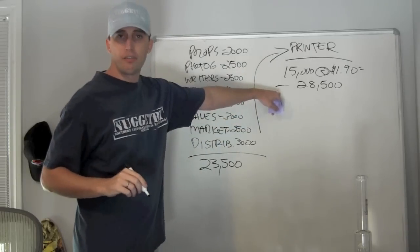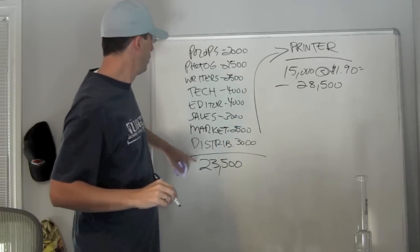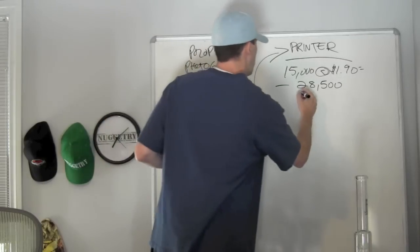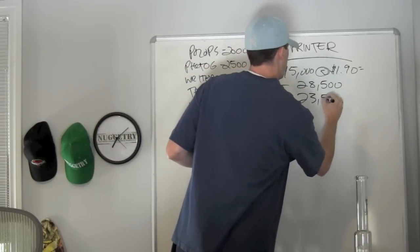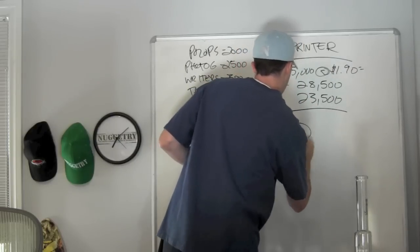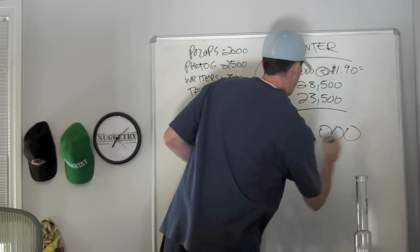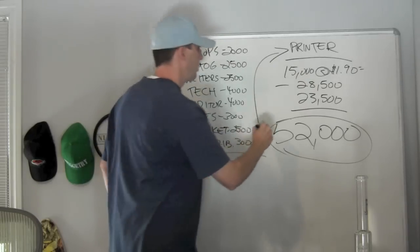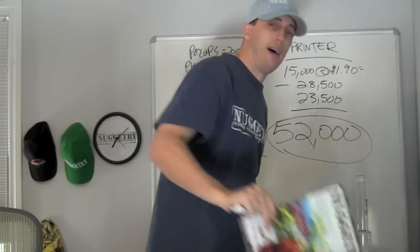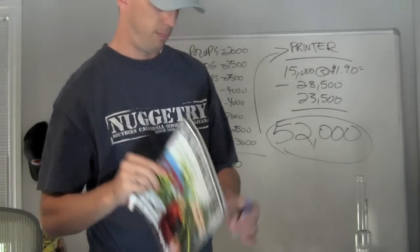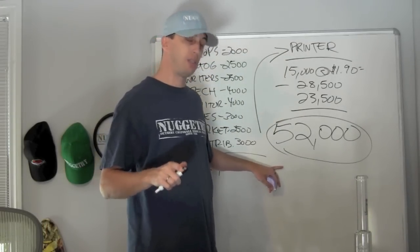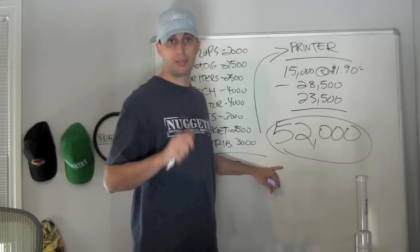So if you add the $28,500 that we pay to the printer to the $23,500 that we pay to the entire staff that puts the magazine together, it costs me $52,000 to put this issue of Nuggetree Magazine together. Holy shit, that's a lot of money. Some of that comes back. You're supposed to get most of that back in advertising, but we don't and let me show you why.